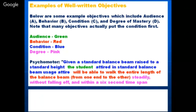In this statement the audience in green is 'the student.' The condition is 'given a standard balance beam raised to a standard height.' The behavior is 'will be able to walk the entire length of the balance beam from one end to the other.' The degree is 'steadily without falling off and within a six-second time limit.' All four components of the ABCD formula are clearly present.